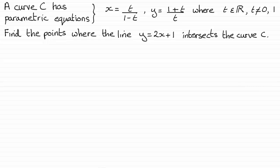Hi. In this video, I want to show you how to solve a common question with parametric equations — that is, when given a parametric equation, where does another curve or straight line given in Cartesian form intersect it? To demonstrate this, we've got a curve C with parametric equations x equals t divided by 1 minus t, and y equals 1 plus t divided by t, where t is a real number but not equal to 0 or 1. We need to find the points where the line y equals 2x plus 1 intersects curve C.